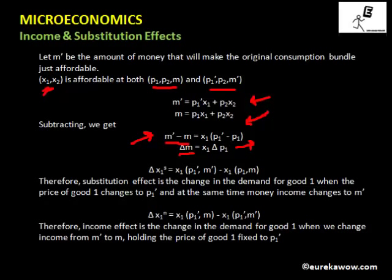What will be the substitution effect — the change in the demand for good one only because of the substitution effect? It will be the quantity of good one demanded at prices P1 dash, P2, M dash minus the quantity of X1 demanded at prices P1, P2, M. So delta X1^S equals X1(P1 dash, M dash) minus X1(P1, M). The substitution effect is the change in demand for good one when the price changes to P1 dash and money income changes from M to M dash.